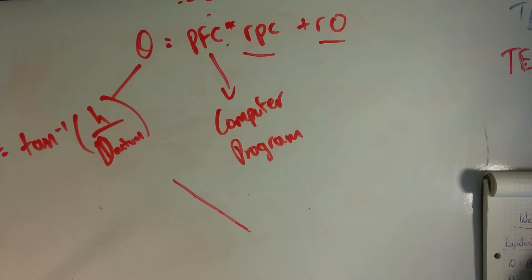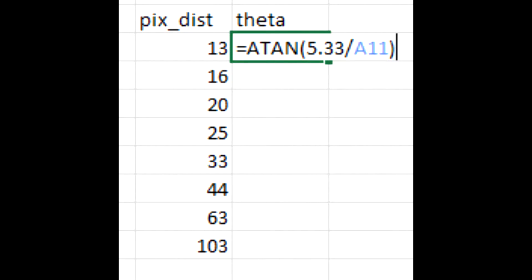So I'm going to show you how to do that now. If you just go over to Excel, in the left column here we have pixel distance, which is just the same set of values that we measured earlier on. But for theta we're going to calculate it using the equation, and I show it on the board here. Theta is inverse tan of h over d actual, which is the d we measured with our measuring tape.